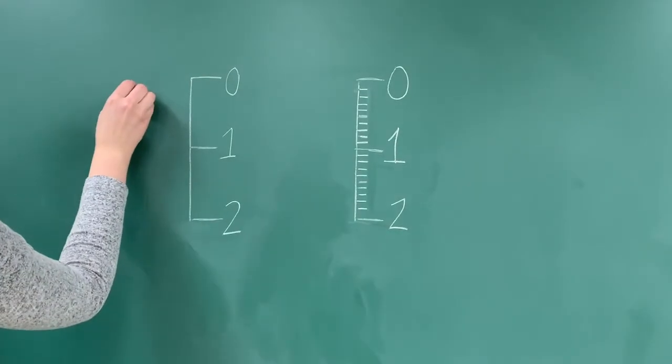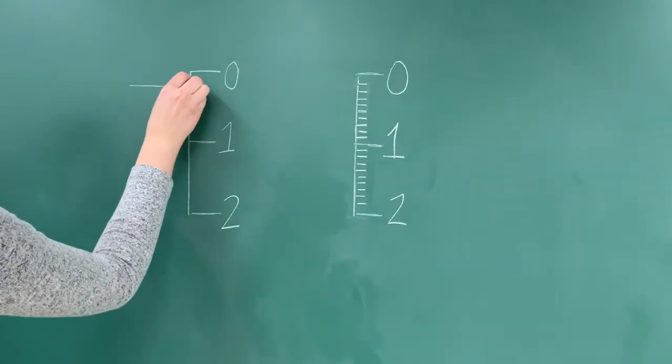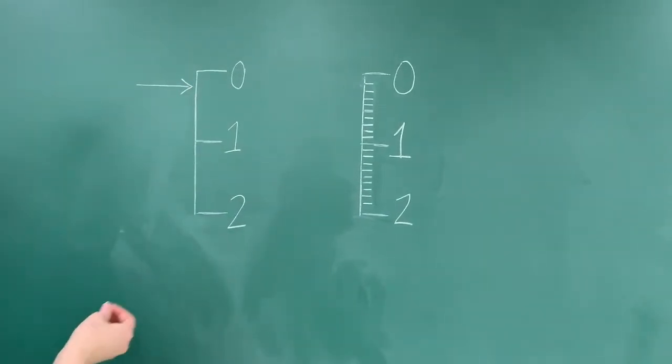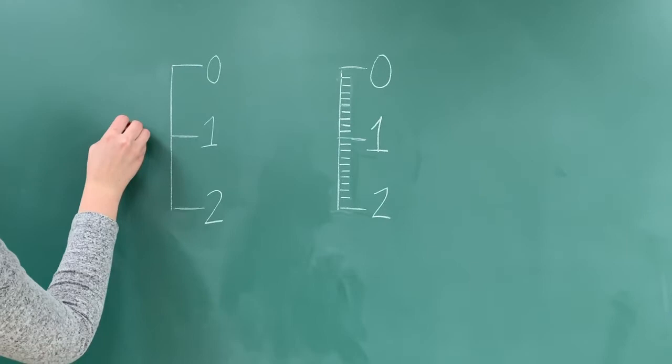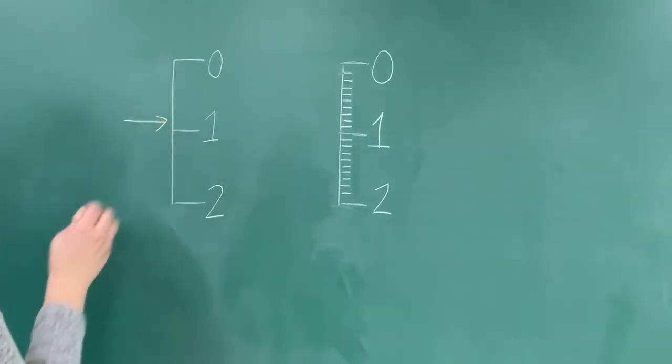But rarely will an object be exactly halfway. If the arrow were to fall closer to a fourth of the way, this could be estimated as 0.2 centimeters. If the arrow looks to fall three-fourths of the way, we can say this is 0.8 centimeters.